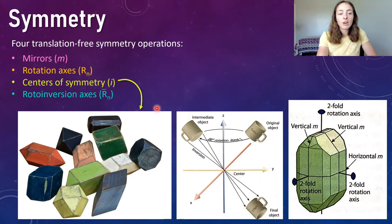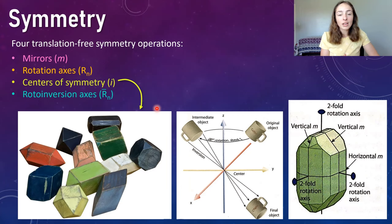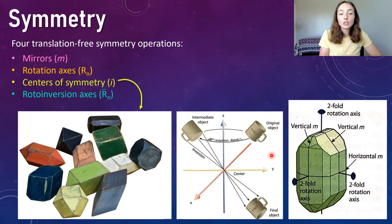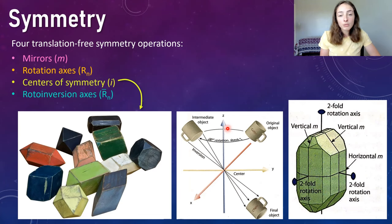Rotoinversion axes apply when you can rotate and invert the object and it comes out the same. These can also be twofold, threefold, etc., depending on the same criteria as regular rotation axes. For example, if you rotate your object 180 degrees around a rotation axis and then invert it along the center of symmetry and get the same structure, that would be a twofold rotoinversion axis. If it works every 120 degrees, it would be threefold.